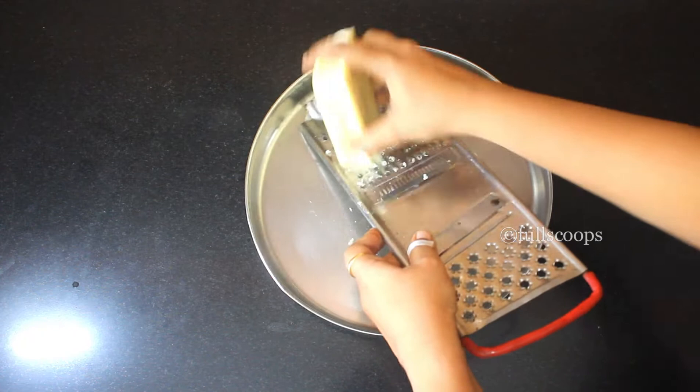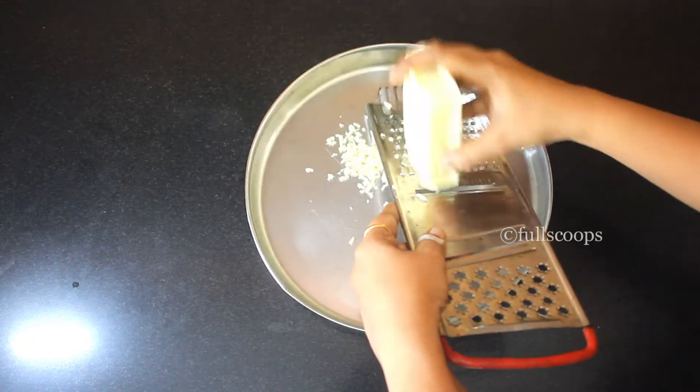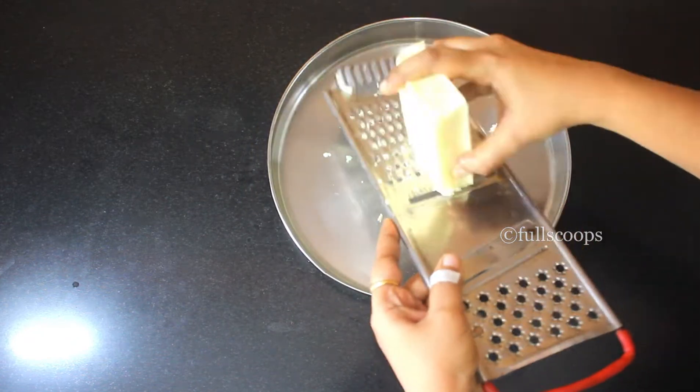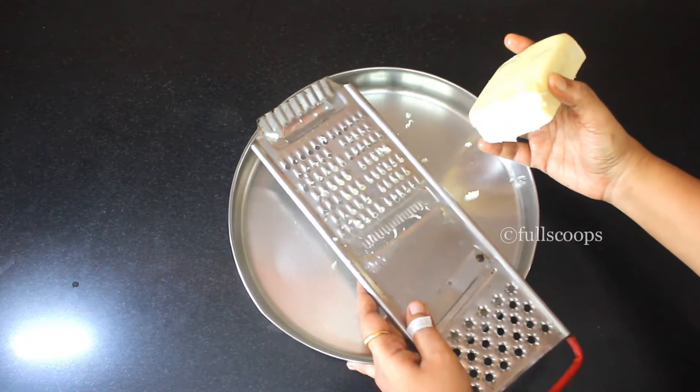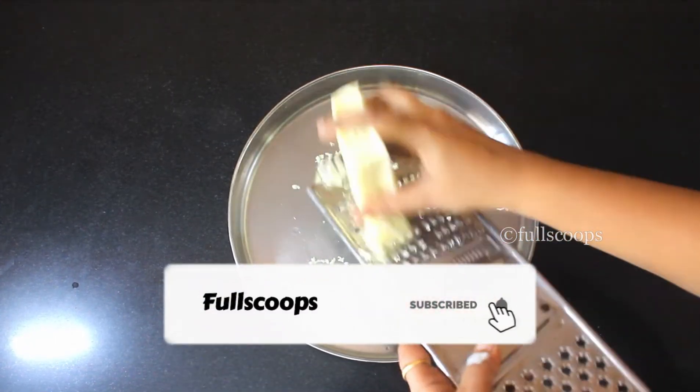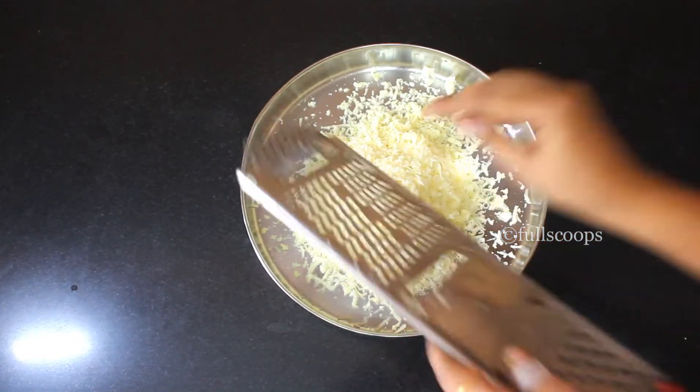Take whichever cheese cube that you are using, keep it out for some time and start grating it with a small handheld grater like this. Or if you have a food processor, you can grate it with the help of a food processor also. Especially if you want to store large bulk quantities of cheese, you can use a food processor to grate it.